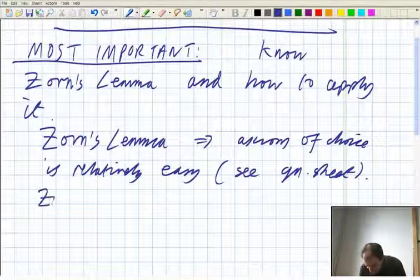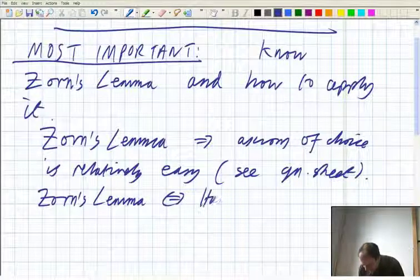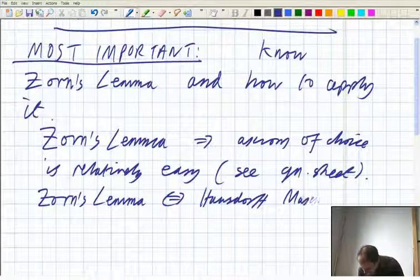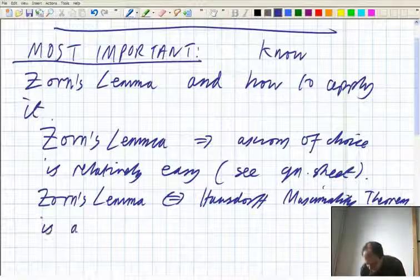The Zorn's lemma, if and only if Hausdorff-Maximality theorem, is also relatively easy.